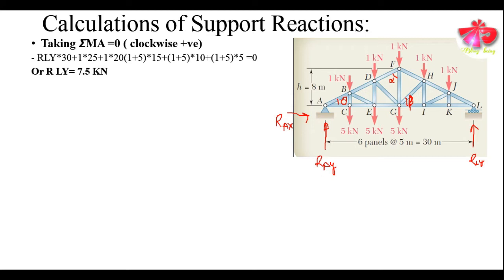R_LY equals 7.5 kN upward. Since we assumed R_LY to be in the upward direction and it came out positive, our assumption is correct. Likewise, we will use another equilibrium condition: summation of F_Y equals to zero, assuming upward direction as positive.